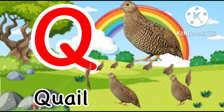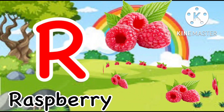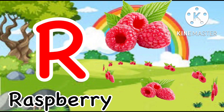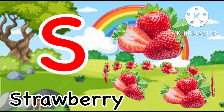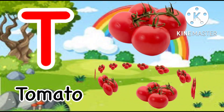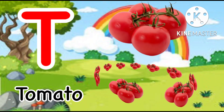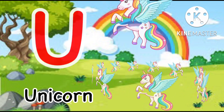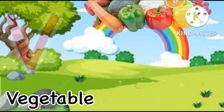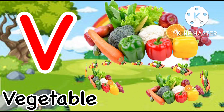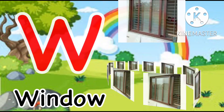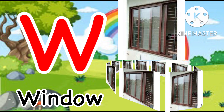R for raspberry. S for strawberry. T for tomato. U for unicorn. V for vegetable.